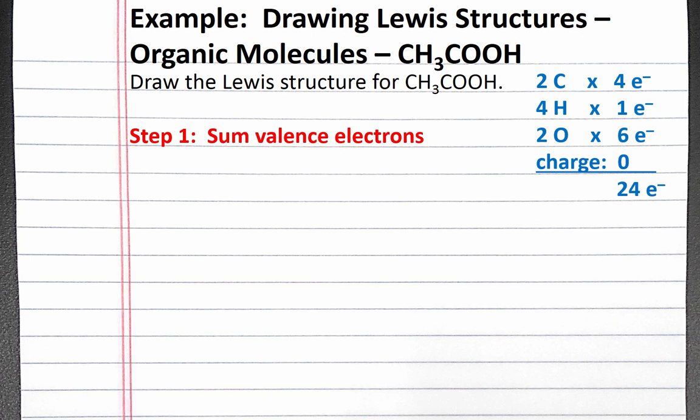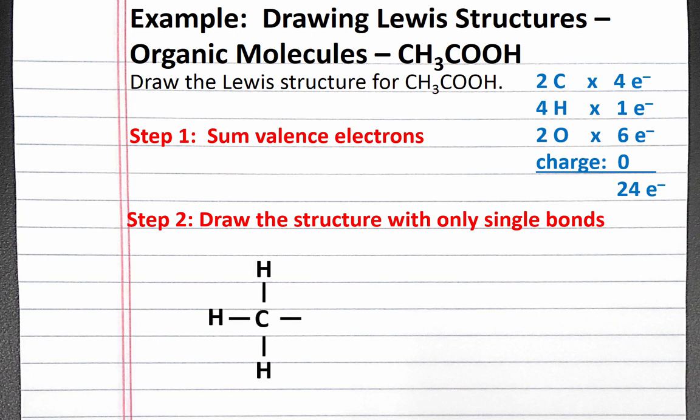Our next step is to draw the structure with only single bonds. The chemical formulas for organic molecules can be written to give an idea of how to draw them. Our formula has a CH3, which is three hydrogen atoms bonded to a central carbon atom, and COOH,